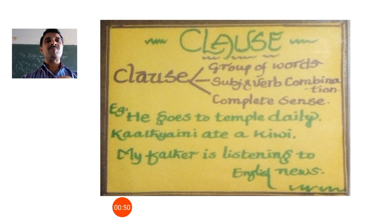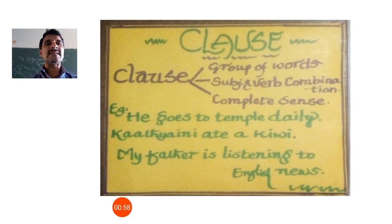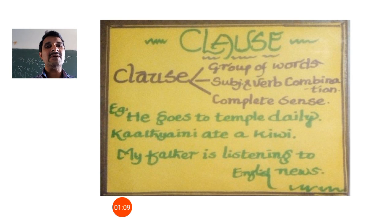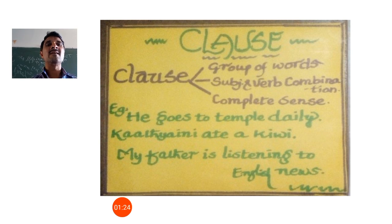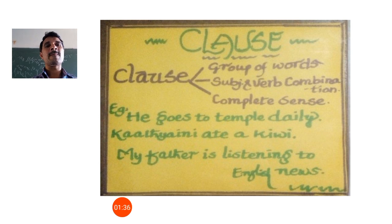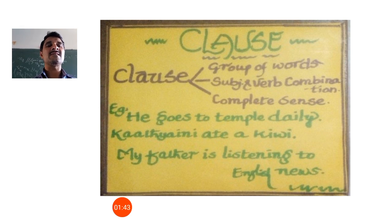Let's go with an example: 'He goes to temple daily.' Here, 'he' is the subject and 'goes' is the verb — subject-verb combination fulfilled. 'He goes to temple daily' means he visits a temple every day, giving complete sense. So it is known as a clause. Another example: 'Kathiaini ate a kiwi' and 'My father is listening to English news.' All three sentences fulfill the three conditions, so all three are known as clauses.